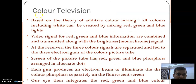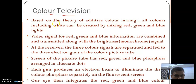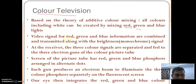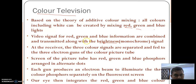Now the color television. Color television operates on the theory of additive color mixing, which means all colors including white can be produced by three colors: red, green, and blue. These are called primary colors. With the help of these primary colors we can produce any color, even white. The video signals for the red, green, and blue information are combined and transmitted along with the brightness information.